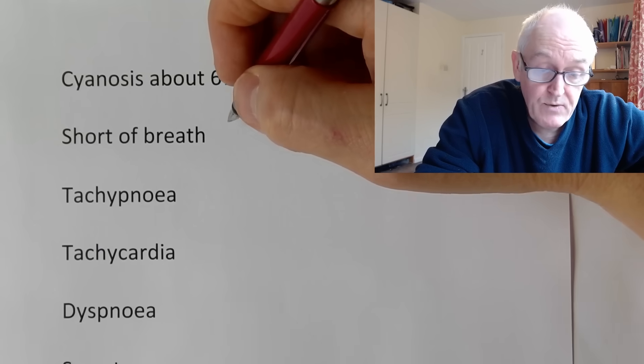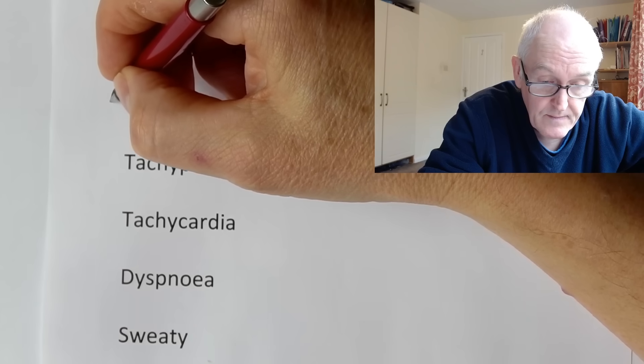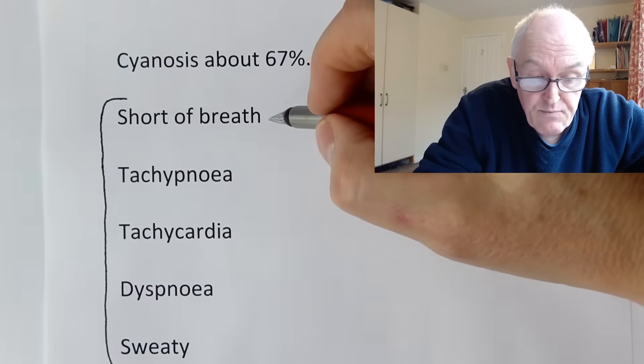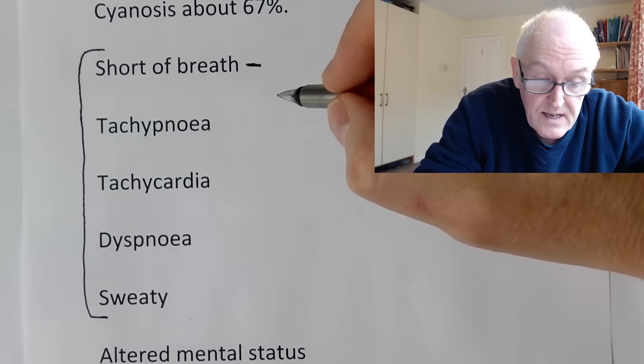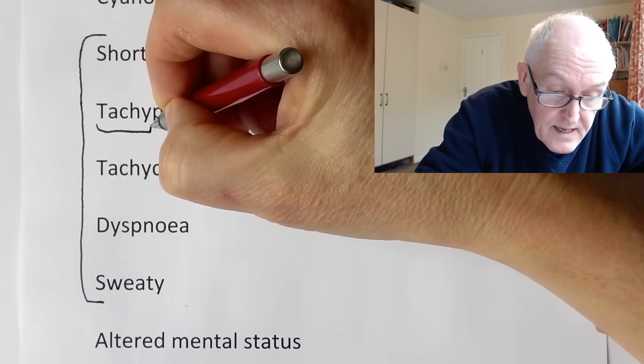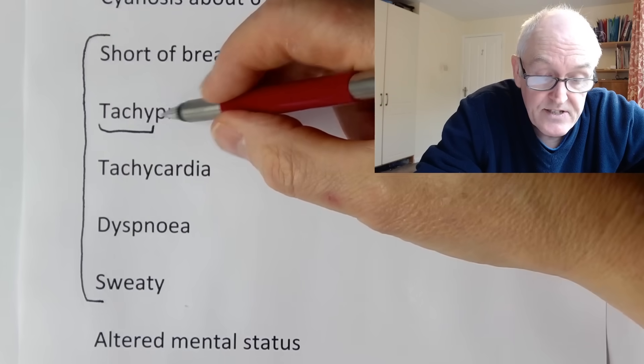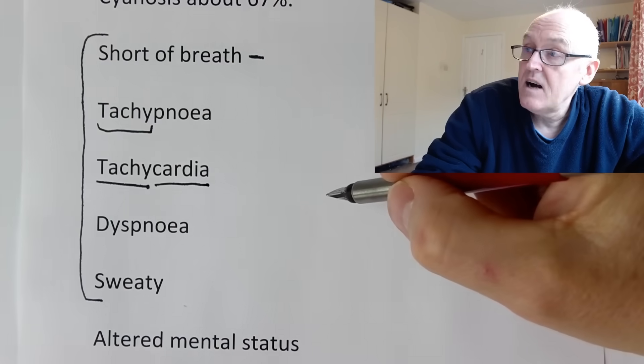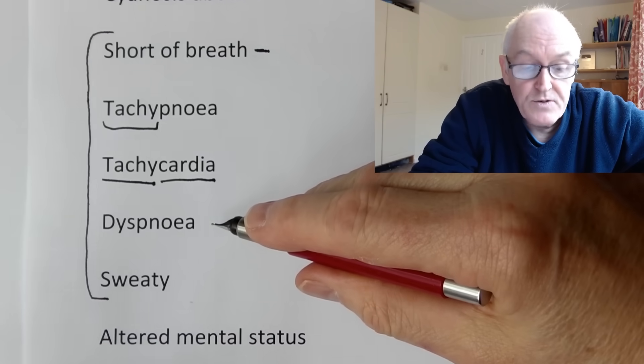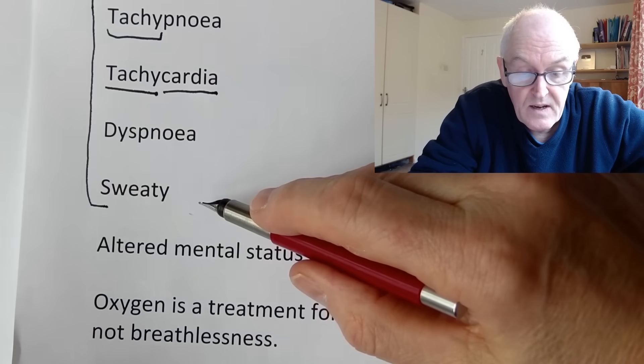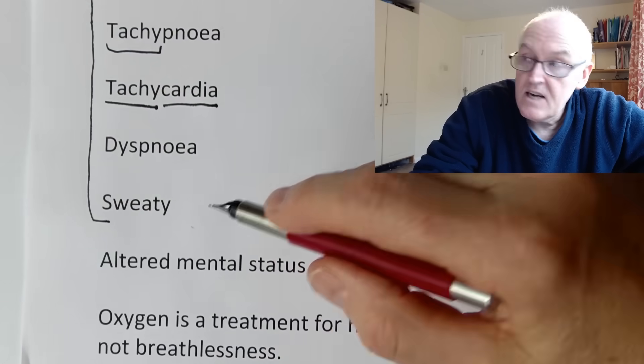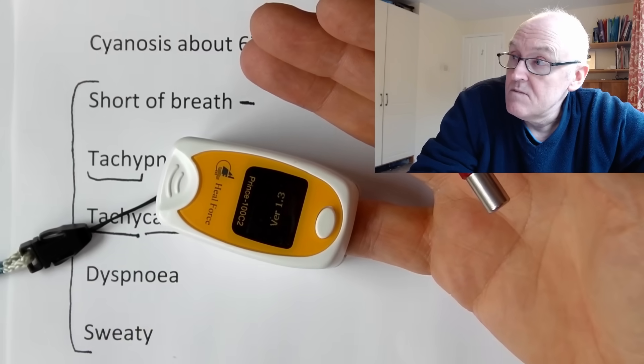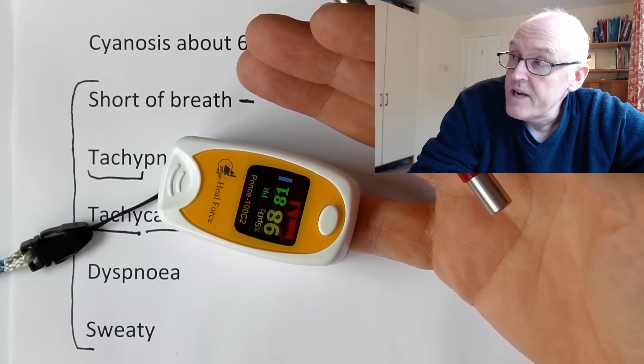Other features you might get with hypoxemia: shortness of breath, tachycardia, tachypnea, dyspnea, sweaty. Tachypnea means fast breathing. Tachycardia is fast heart. Dyspnea is the feeling of difficulty with breathing. You might also become sweaty when you are hypoxemic, but these signs can be difficult to diagnose, difficult to gauge, whereas this one is dead easy. You can just check it any time.